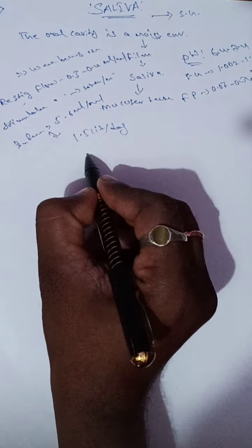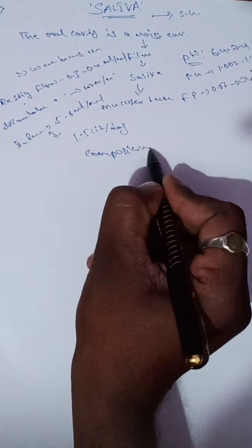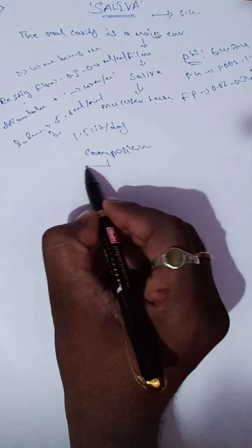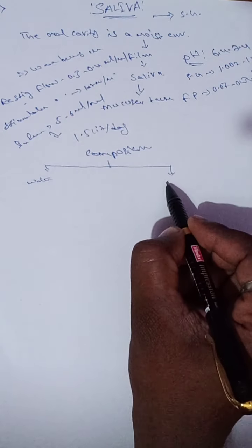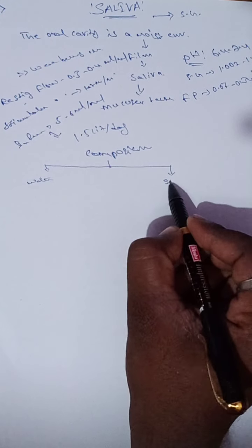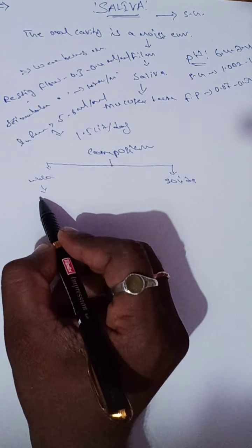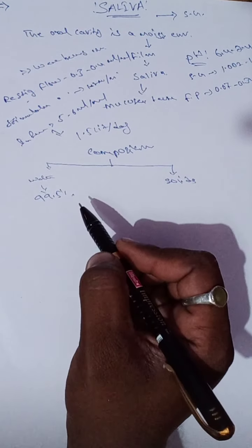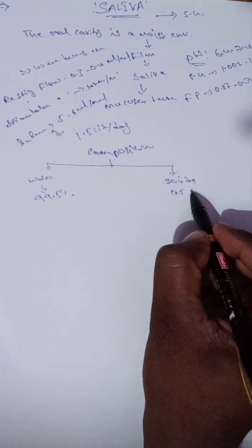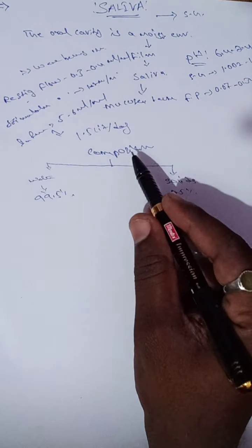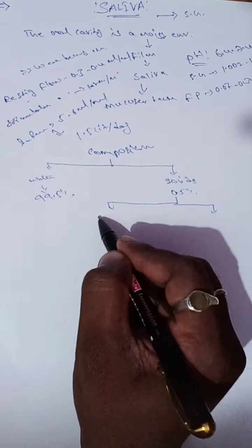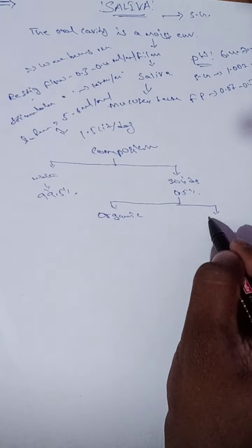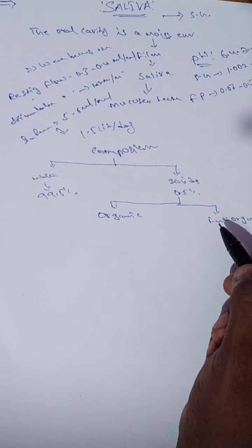What is the composition of saliva? The main content is water and the minor content is solids. The water content is 99.5% and the remaining 0.5% is solids. Solids are classified into two types: organic and inorganic.